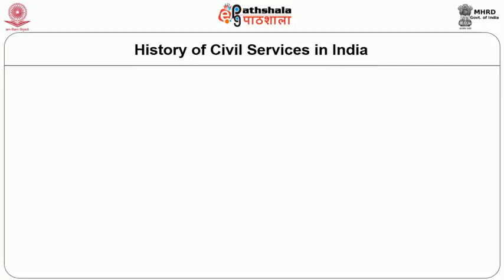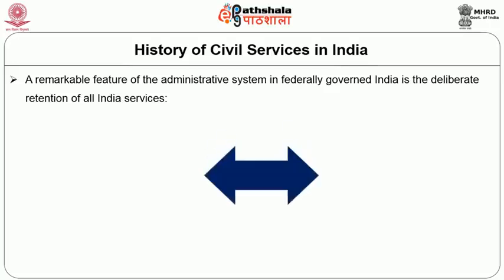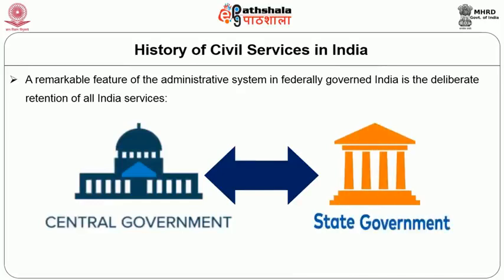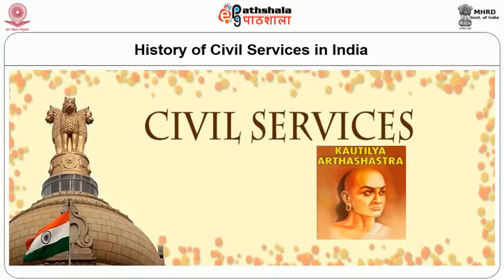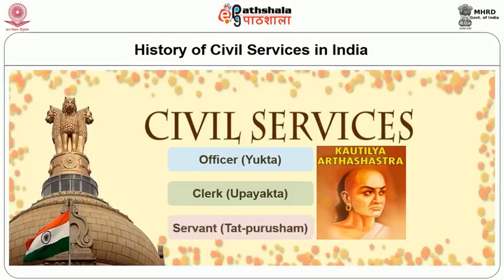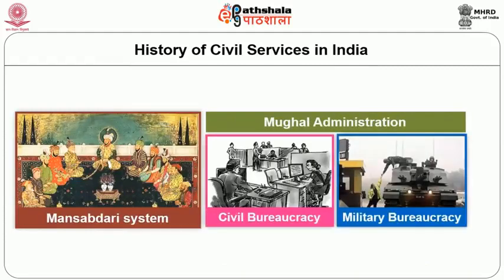A remarkable feature of the administrative system in federally governed India is the deliberate retention of All India Services, the personnel of which are interchangeable between the centre and the state governments. India has the tradition of civil services since ancient times. Kautilya in his book Arthashastra mentioned three categories of government employees: Officer (Yukta), Clerk (Upyukta), and Servant (Tat Purusham). The Mansabdari system was developed during Mughal administration, which combined civil and military bureaucracy.